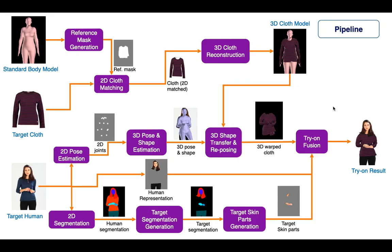This is our full method pipeline. We use a standard A-posed SMPL body model as the reference and apply 2D clothing matching on the target cloth image according to the reference model. We reconstruct the 3D cloth model from the 2D matched cloth using the reference SMPL body model. Then we deform the cloth model by applying the estimated 3D pose and shape from the target human image. Finally, we generate the necessary body parts and combine them with the rendered deformed cloth to produce the final try-on result.